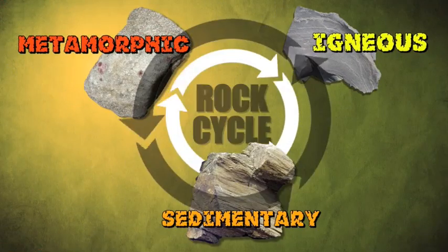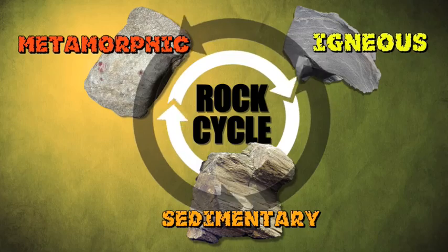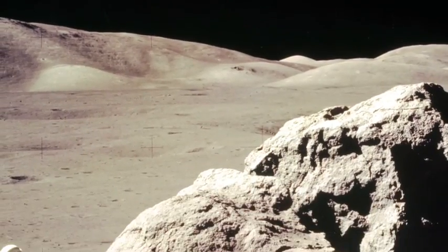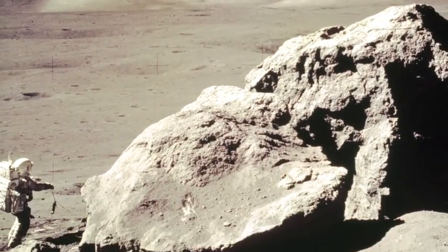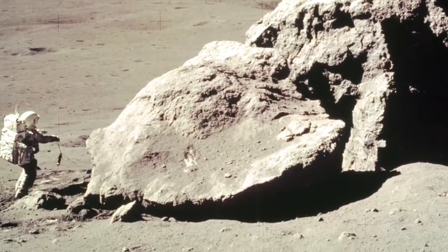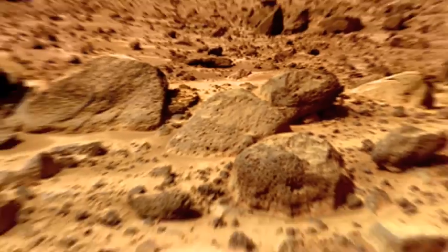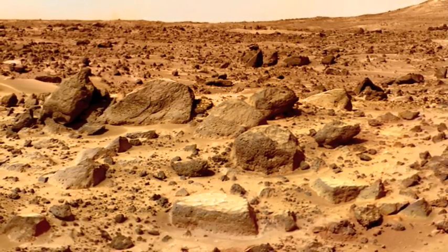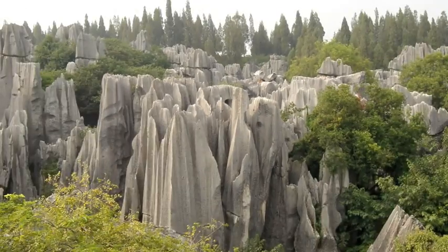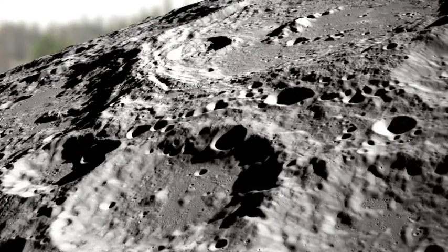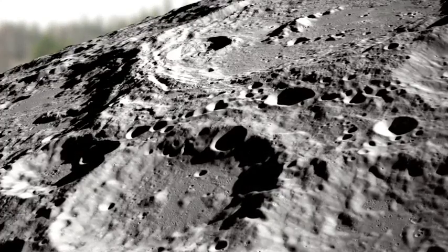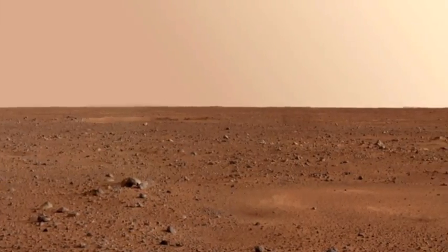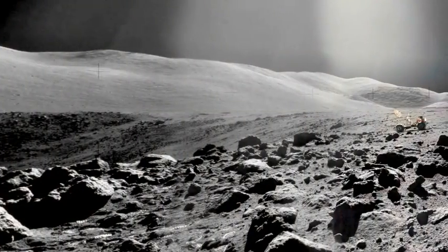Scientists call these changes the rock cycle. But NASA scientists also want to study rocks from other places, like the Moon and Mars. They want to see if other rocks are like the rocks found here on Earth. By studying rocks from the Moon or Mars, scientists can learn a lot about how the land was formed and how it has changed over time.